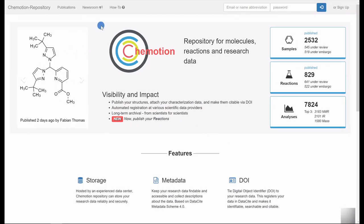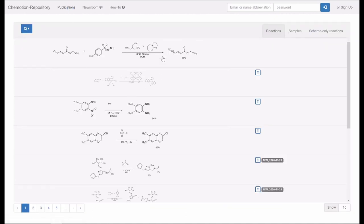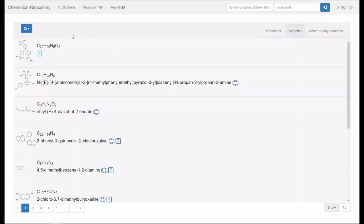The repository distinguishes between three different categories within the publications: reactions, samples, and scheme-only reactions.